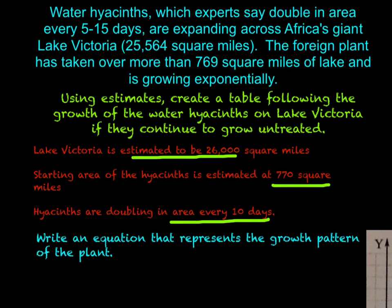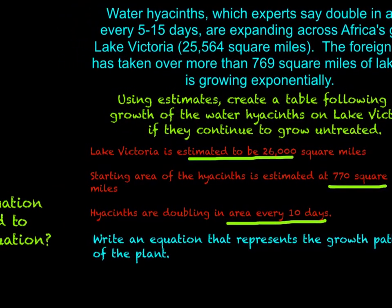We need to write an equation that represents the growth pattern of this plant. So we have the total space of the lake is 26,000 square miles, but we have a starting area of 770 square miles. So if we were to start out at day zero, we're looking at 770 square miles of this lake being taken up. And the water hyacinths are doubling in area every 10 days. So let's make a little bit of a table here.